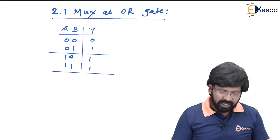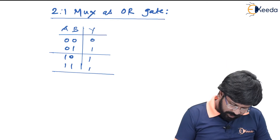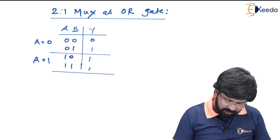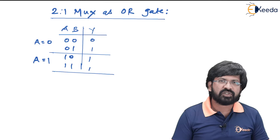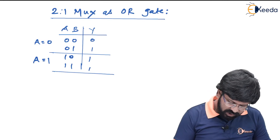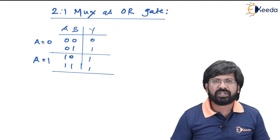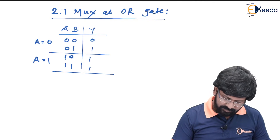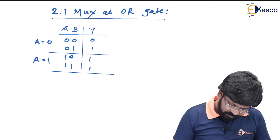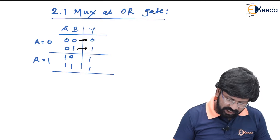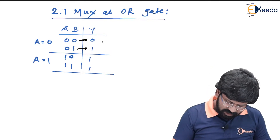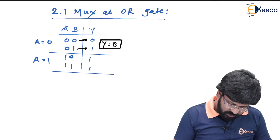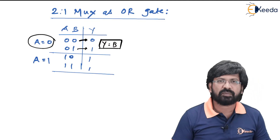I made exactly two partitions. In the upper part A equal to 0, and in the lower part A is equal to 1. For each partition, I try to get Y in terms of B. For A equal to 0: when B equal to 0, Y is 0; when B equal to 1, Y is 1. So Y is exactly a copy of B — Y equal to B. What needs to be remembered: when A equal to 0, Y should be equal to B.